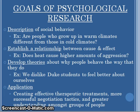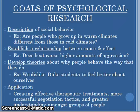Some goals of psychological research — these are not the goals of psychology specifically; we know those are explain, describe, predict, and control behavior. The goals of psychological research, however: we want to describe some social behavior, establish a relationship between variables or between cause and effect. For example, does heat cause higher amounts of aggression? We want to develop theories about why people or animals behave the way they do, and then we want to apply it — that's the behavior-change part.